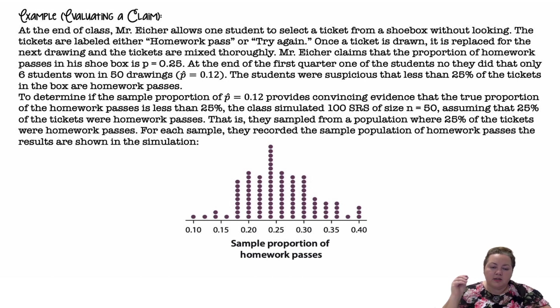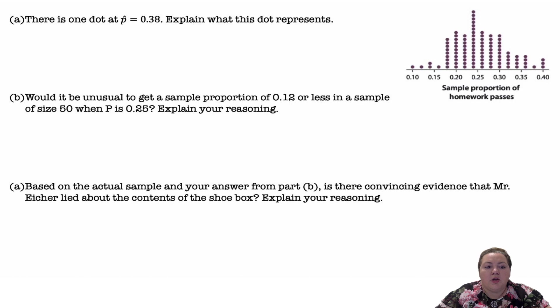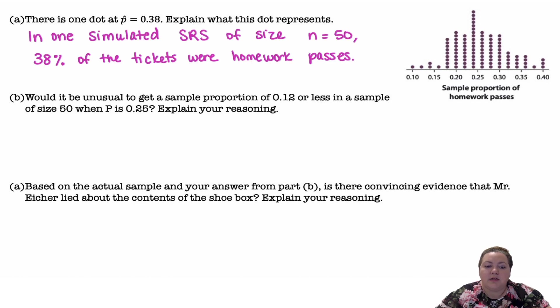They sampled from a population where 25% of the tickets were homework passes. For each sample, they recorded the sample population of homework passes. The results are shown in the simulation. They took a population that was made up 25% of homework passes. They randomly selected 50 times and recorded their results. Then they did this many, many times. And this is our sampling distribution. They did it 100 times. There is one dot at p̂ = 0.38. Explain what this dot represents. So in one simulated simple random sample of size n = 50, 38% of the tickets were homework passes.